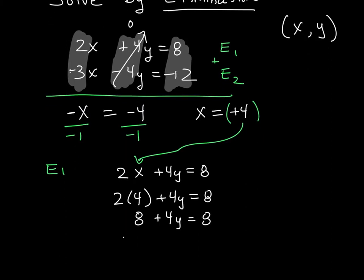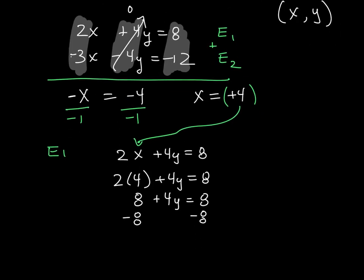But don't let this question throw you because when you subtract 8 from both sides, you do get an answer. It's just an answer equal to 0. So when you divide both sides by 4, 0 divided by 4 is still an answer. It's just that y is equal to 0. So your ordered pair solution is my x value, which is 4, and my y value, which is 0.